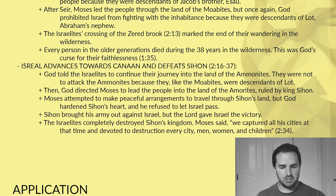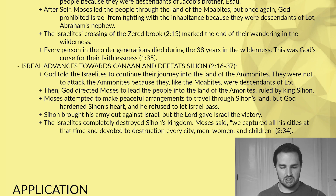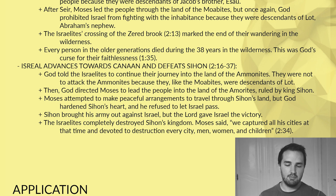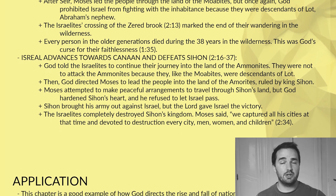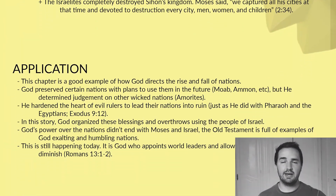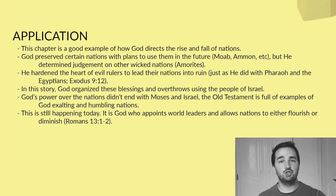We're told that the Israelites completely destroyed Sihon's kingdom. Moses said: 'We captured all his cities at that time and devoted to destruction every city — men, women, and children.' And so that is Deuteronomy 2. We are still recounting the history and the journey from Egypt to Canaan.